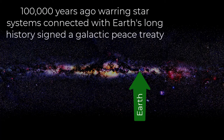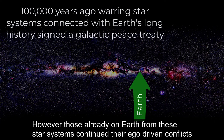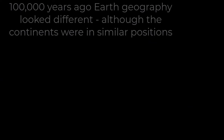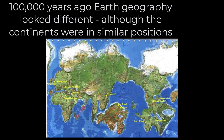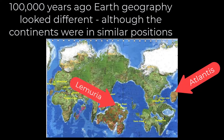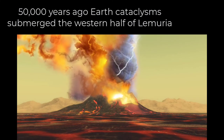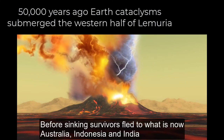100,000 years ago, warring star systems connected with Earth's long history signed a Galactic Peace Treaty. However, those already on Earth from these star systems continued their ego-driven conflicts. Earth geography looked different at that time, although the continents were in similar positions. 50,000 years ago, Earth cataclysms submerged the western half of Lemuria. Before sinking, survivors fled to what is now Australia, Indonesia and India.